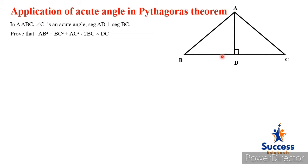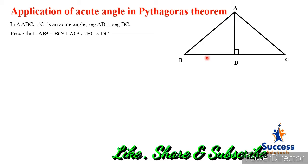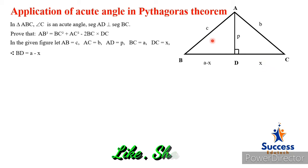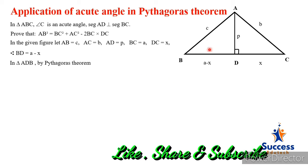AD is perpendicular to BC. Since AD is perpendicular to BC, it divides BC so that BD equals CD. We have to prove: AB² = BC² + AC² − 2·BC·DC. Now I am assigning notations: AB = c, AC = b, BC = a, and DC = x, so BD = a − x.